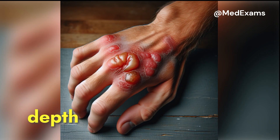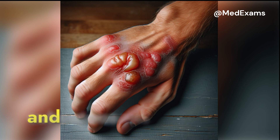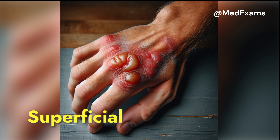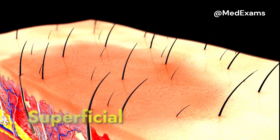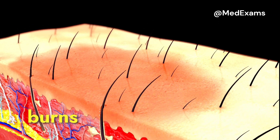Burn wounds are classified according to depth, based on which layers of cutaneous and subcutaneous tissues are damaged. Superficial burns damage only the epidermis.